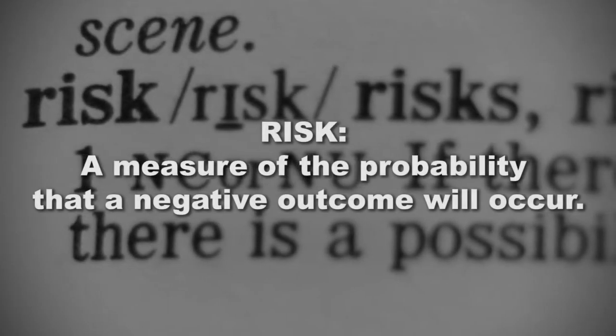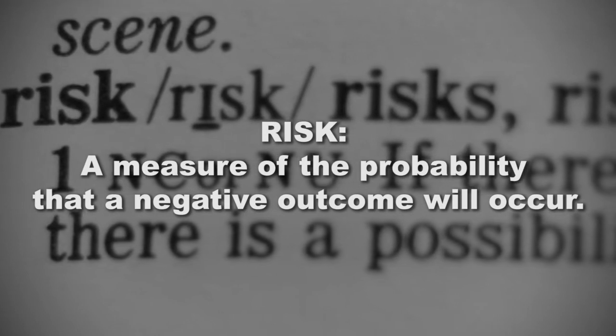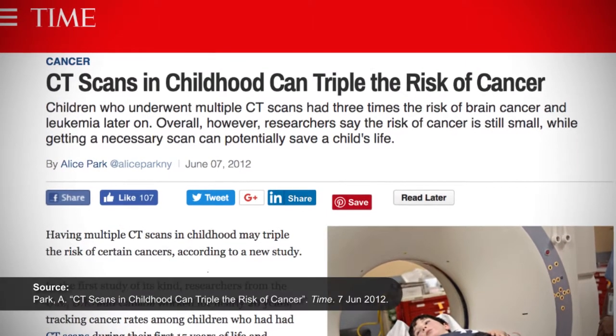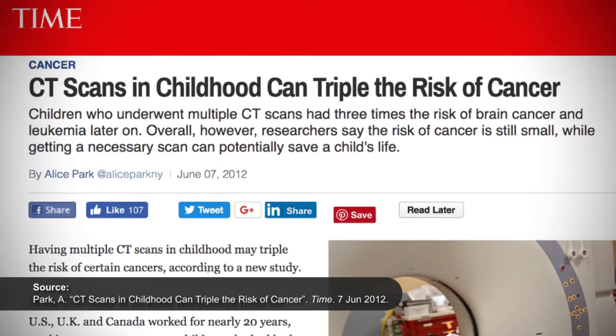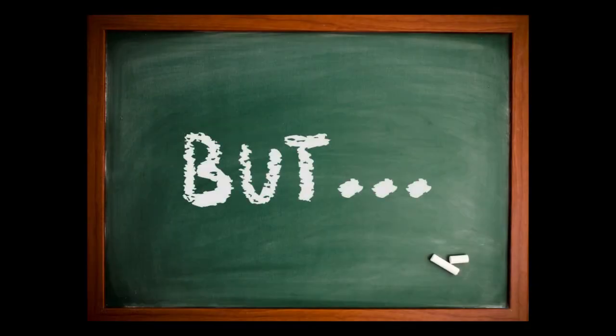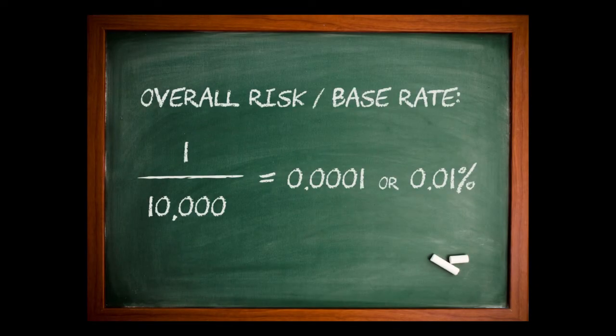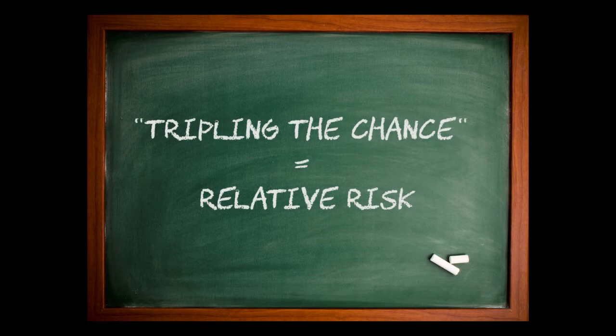Following from the base rate, let's look at a distinction that is often ignored in the media's reporting of scientific findings: the difference between relative risk and absolute risk. Risk is a measure of the probability that a negative outcome will occur, but there are different kinds of risk. Suppose you see a media headline that reports that CT scans in childhood triple the chance of brain cancer. This might be a cause for alarm, but then we find out that the overall risk, or base rate, is roughly one case per 10,000 children aged 0-9.